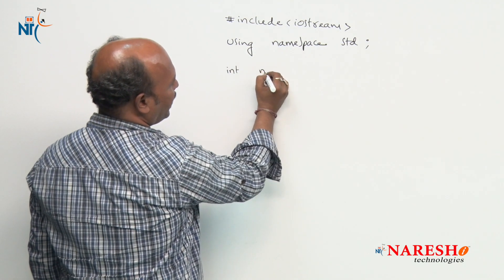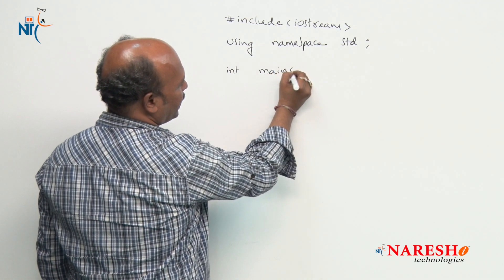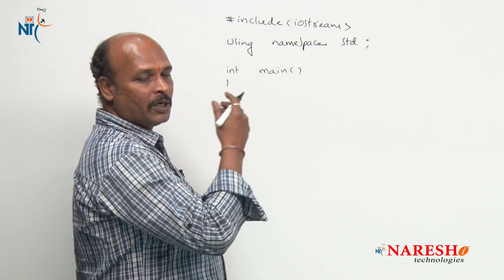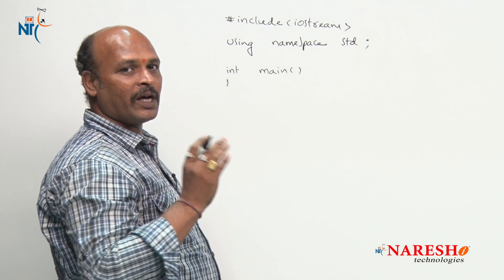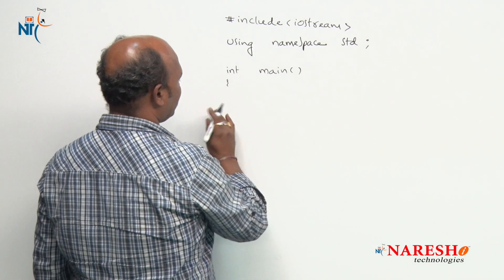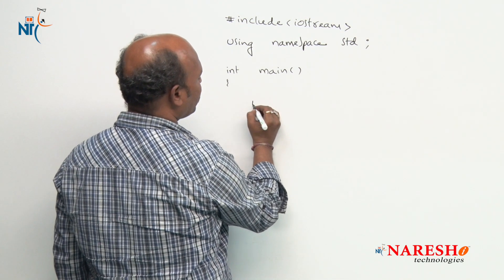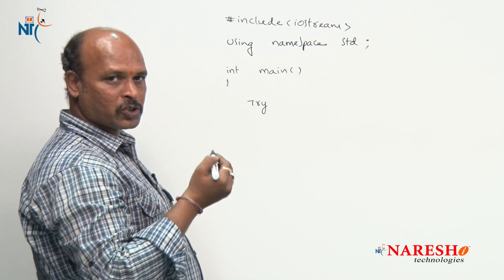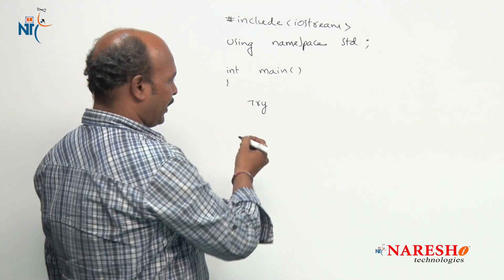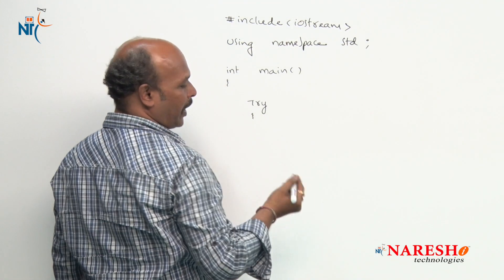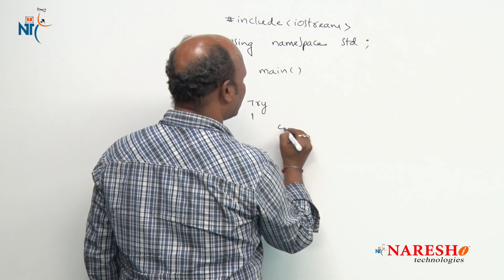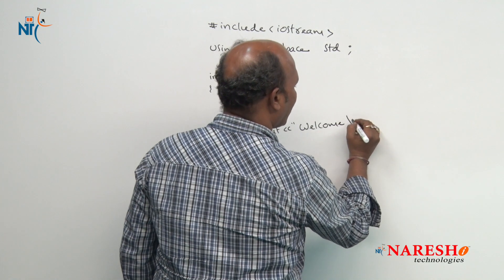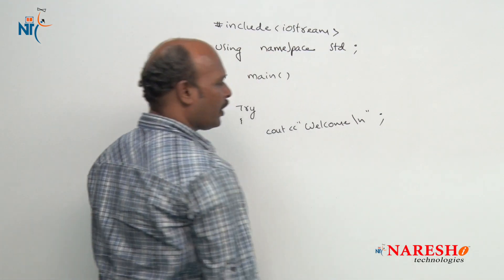Next, int main. Just remove the void main in our program and place only int main in our example. Now directly I am going to start a try block here. Inside this try block I am going to write cout, then welcome, then a newline.